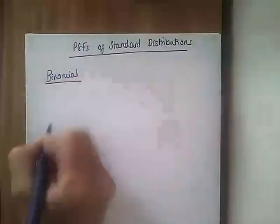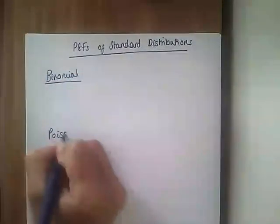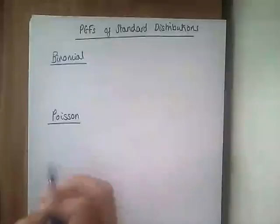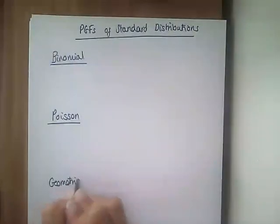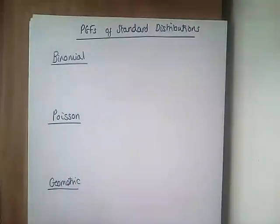Now, PGFs obviously have to come with discrete distributions, so they are only looking at the discrete distributions that we've done so far, which are binomial, Poisson, geometric, and negative binomial.